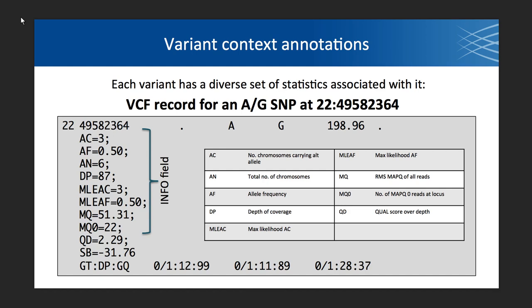HaplotypeCaller, in addition to making a call — making a record that says chromosome 22 at this position, with this reference allele, this variant allele, and this quality — also gives us information about the variant: allele count, allele frequency, how many chromosomes were found (in this case six), total depth, and so on. Some of these numbers are the annotations we will use — statistics that were calculated on the reads or on the variant while HaplotypeCaller was looking at it.